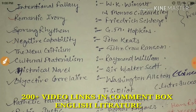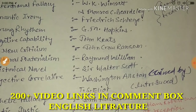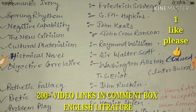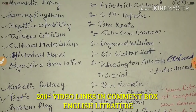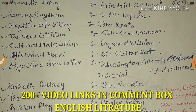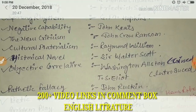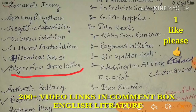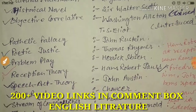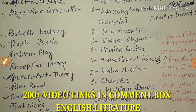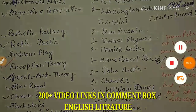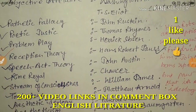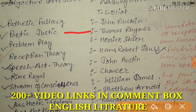The term 'Objective Correlative' was coined by Washington and Elston, and T.S. Eliot introduced it to a wider audience. There is also a detailed video for 'Objective Correlative' on my channel. 'Pathetic Fallacy' is by John Ruskin. 'Poetic Justice' is by Thomas Rymer.